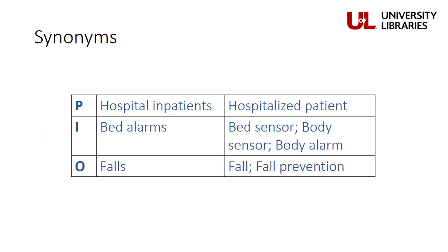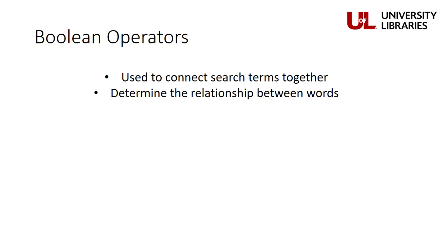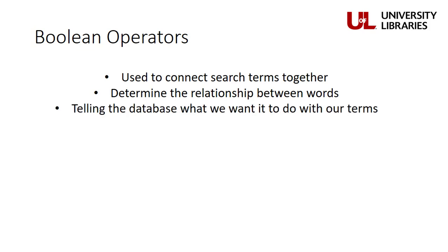When we look back at our terms, we might consider the following synonyms. Now that we have the terms we'll use to search ready to go, it's time to learn how to combine them into an efficient search strategy. To connect terms together in a database like PubMed or CINAHL, we use words called Boolean operators. These terms not only link our search keywords together, they determine the relationship between the words and tell the database what we want it to do with our search.